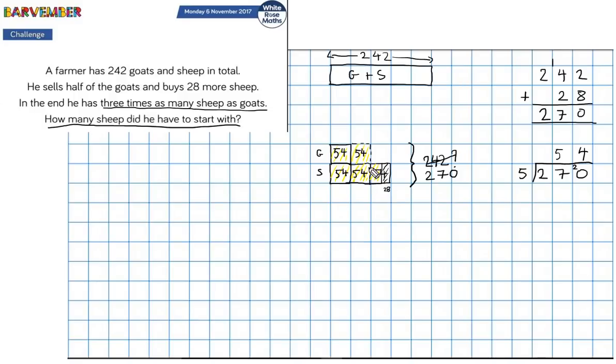Well, not quite because I don't have the whole of this. So what I could do is 54 times 2 plus 54 subtract 28 or 54 times 3 subtract 28, which is how we're going to do it.